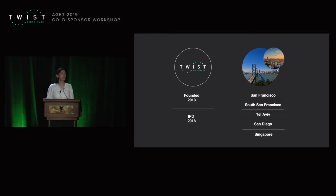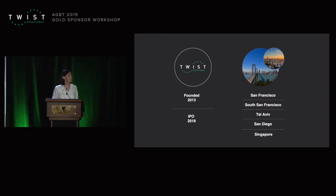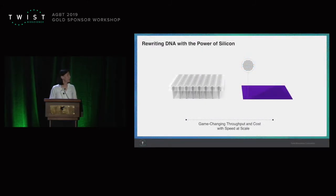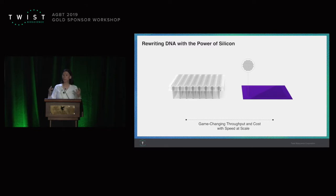For those of you that don't know TWiST, we were founded in 2013 and we recently did an IPO and we have a global presence. We are building a team that's able to support you throughout the world. TWiST is founded on a foundation of a silicon chip where we can synthesize millions of oligos, in contrast to the classical synthesis of DNA on a 96-well plate. The silicon chip gives us a very disruptive throughput and cost advantage, as well as a quality advantage, to support your targeted sequencing workflow.